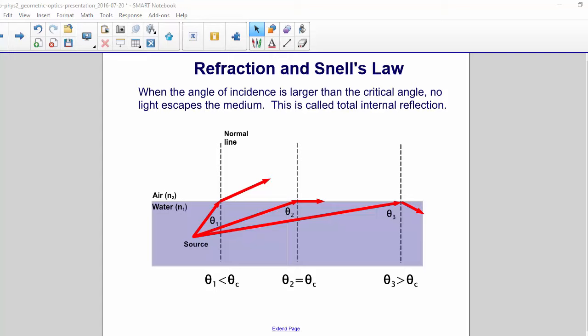So here we can see theta1 is less than the critical angle, so the refracted ray simply bends away from the normal line. Theta2 is equal to the critical angle, so the refracted ray is parallel to the surface. And theta3 is greater than the critical angle, and here we see total internal reflection. No light escapes the medium.